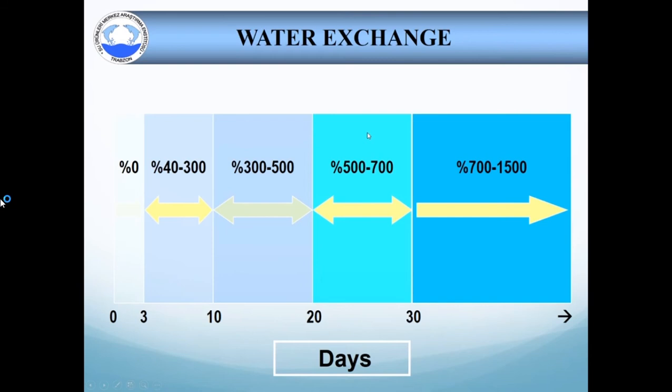Water exchange. No water change is advised until day 3. On day 3, water is changed initially at a rate of 0.4 times a day to maintain adequate rotifer density and avoid water deterioration. At day 10, the rate of water change is gradually increased to 3 times a day, and it is increased as fish grows.